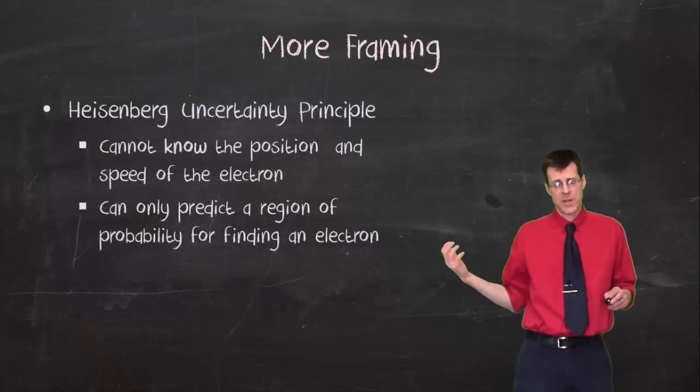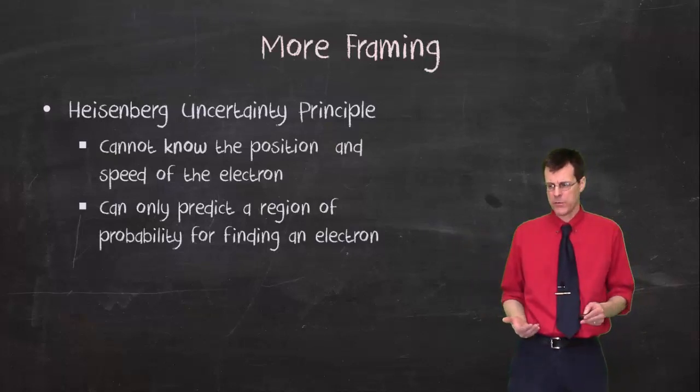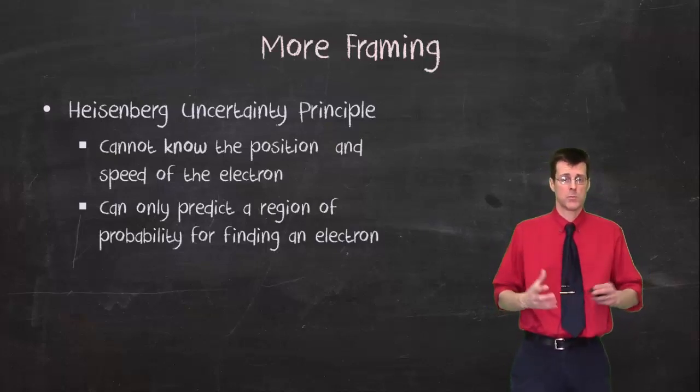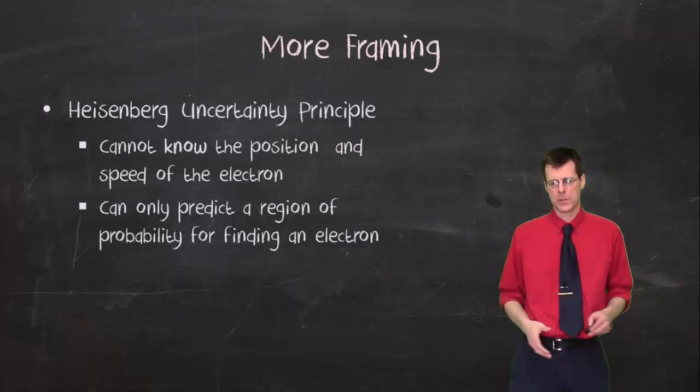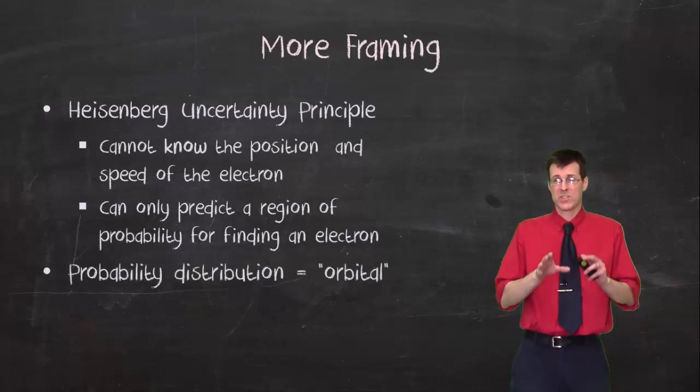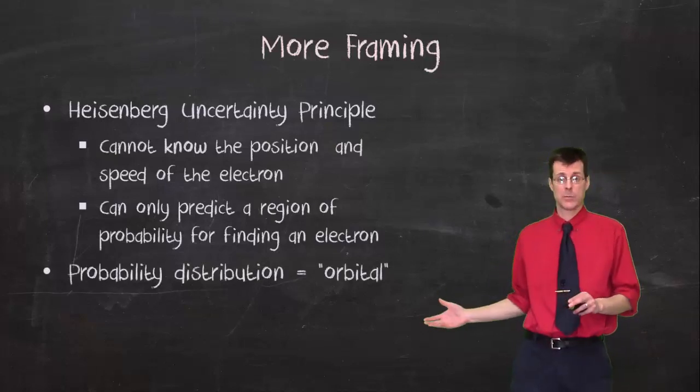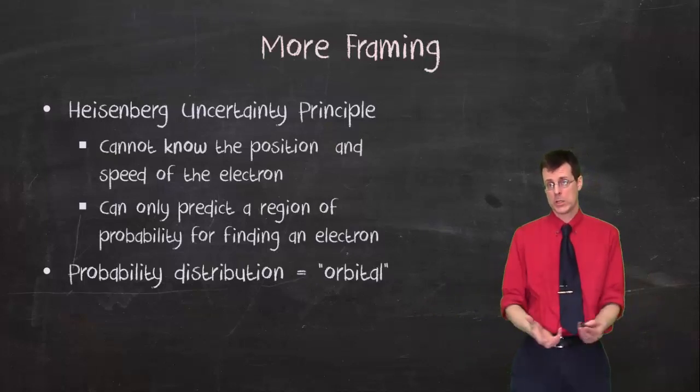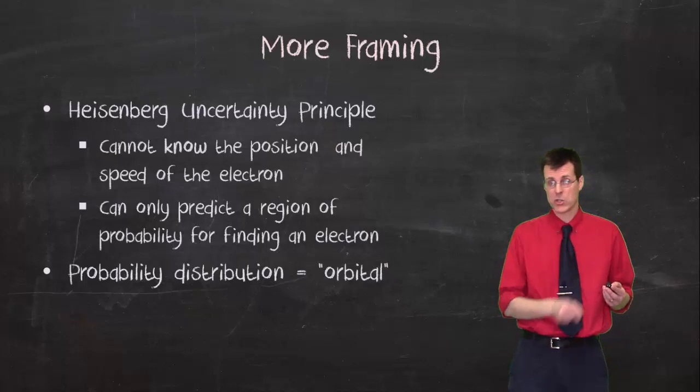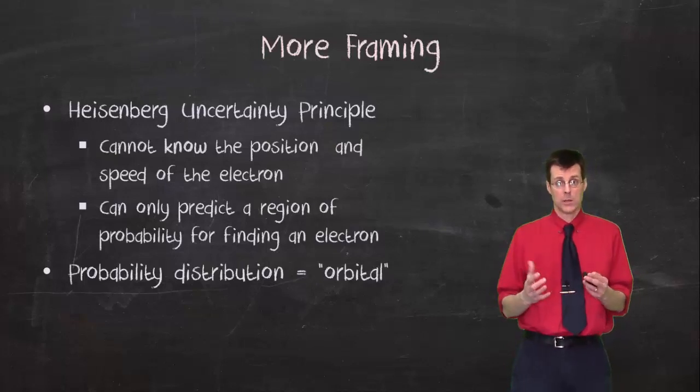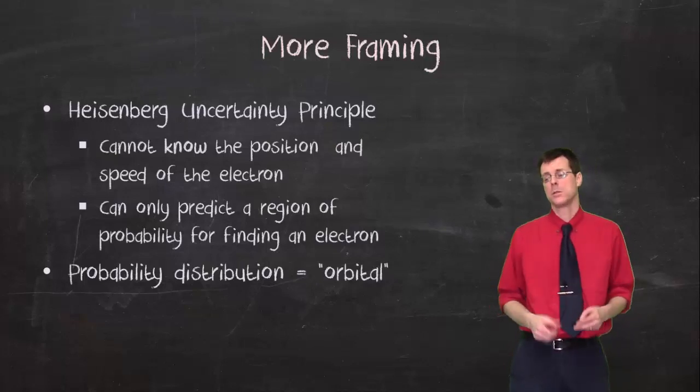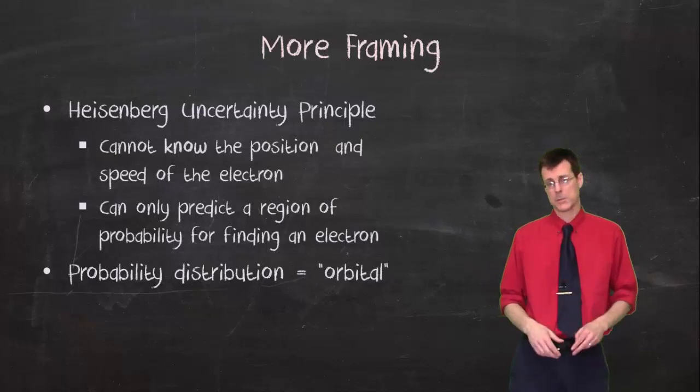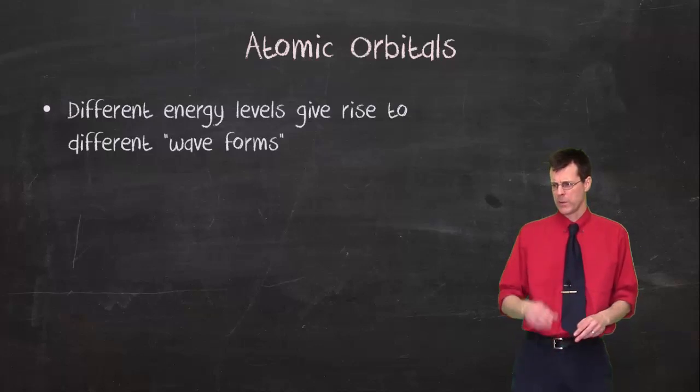So we come up with this, I shouldn't say we, because I had nothing to do with it, but this is where we're at, that we have an area or volume, because we're talking three dimensions, of probability. Now we're going to have a name for that, which is kind of unfortunate because it's similar to our word for orbit. But an orbital is not a circular ring. It's going to be a volume, a three-dimensional space, where we're probably going to find the electron. But not for sure.